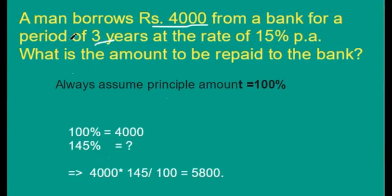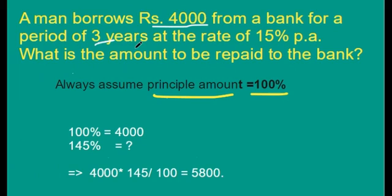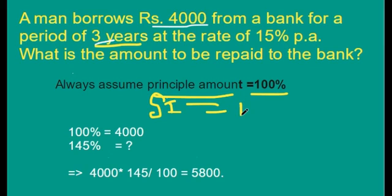See this example. A man borrows 4000 rupees from a bank for a period of 3 years at the rate of 15% per annum. Then what is the amount to be repaid to the bank? According to the shortcut method, always assume principal amount equal to 100%. Here, simple interest equals 3 years into 15%, which becomes 15 × 3 = 45%.